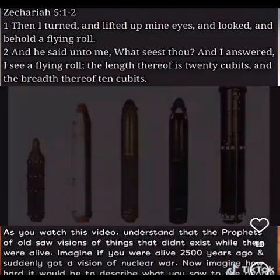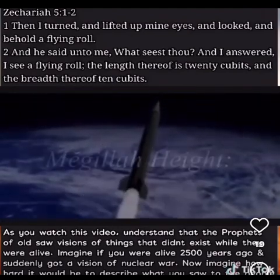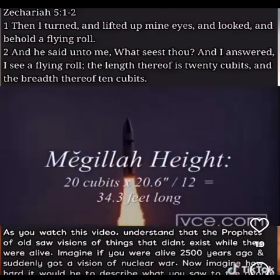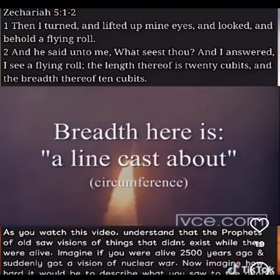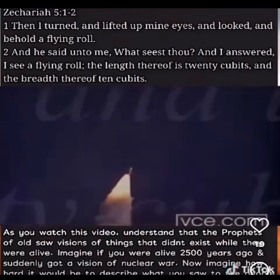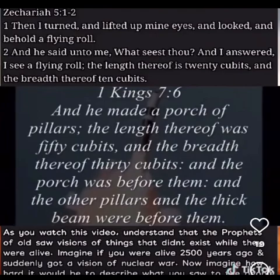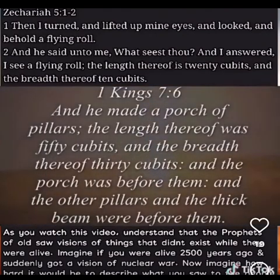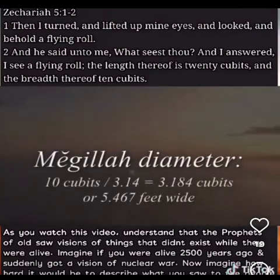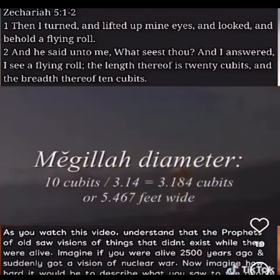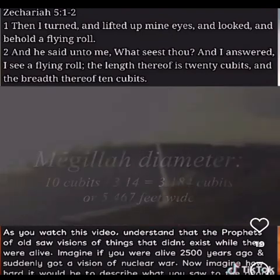He says that it's 20 cubits high and 10 cubits in breadth. Now the word breadth here is not diameter — diameter is a Greek measurement. The breadth Zachariah is talking about is what they call a line cast about; we would call it circumference. Like in First Kings, King Solomon was building his house with these giant pillars — 30 cubits in breadth — meaning the line cast about, not diameter. To find the diameter of this flying Megillah, you take the breadth and divide it by pi. The Megillah was 20 cubits high and 10 cubits in circumference, which comes out to approximately five and a half feet in diameter.